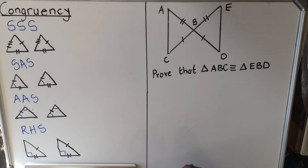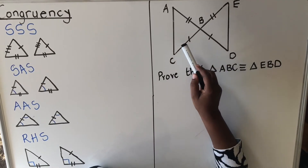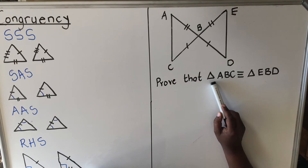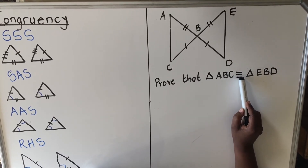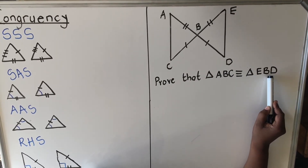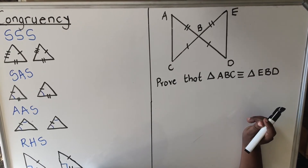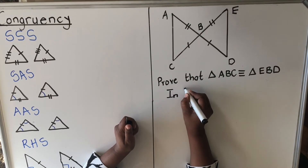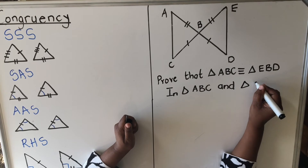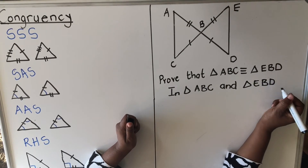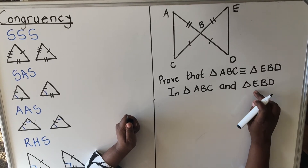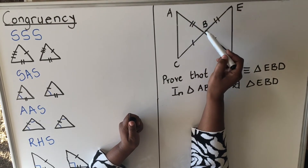Let's look at an example of how we apply this. We are given two triangles: triangle ABC and triangle EBD. We are asked to prove that triangle ABC is congruent to triangle EBD. The congruent symbol is written with three lines, like three equal signs. You write 'In triangle ABC' on one side and 'In triangle EBD' on the other side, then list things you find in each triangle.